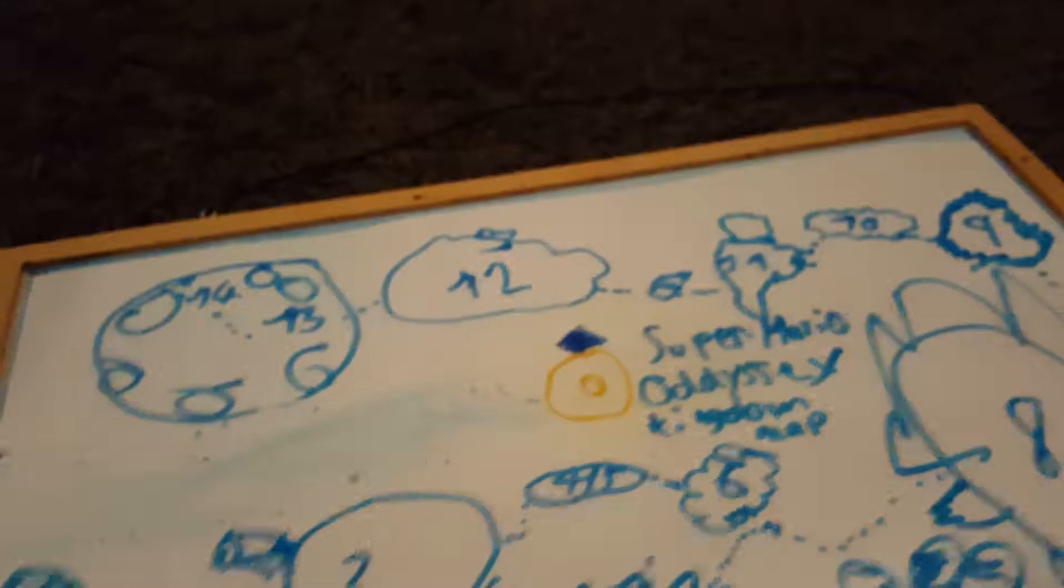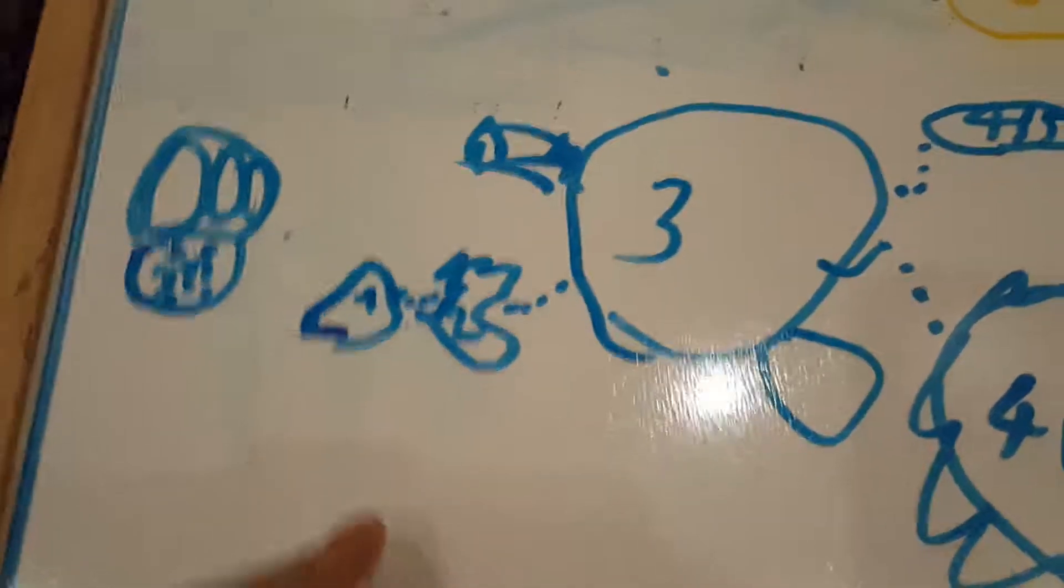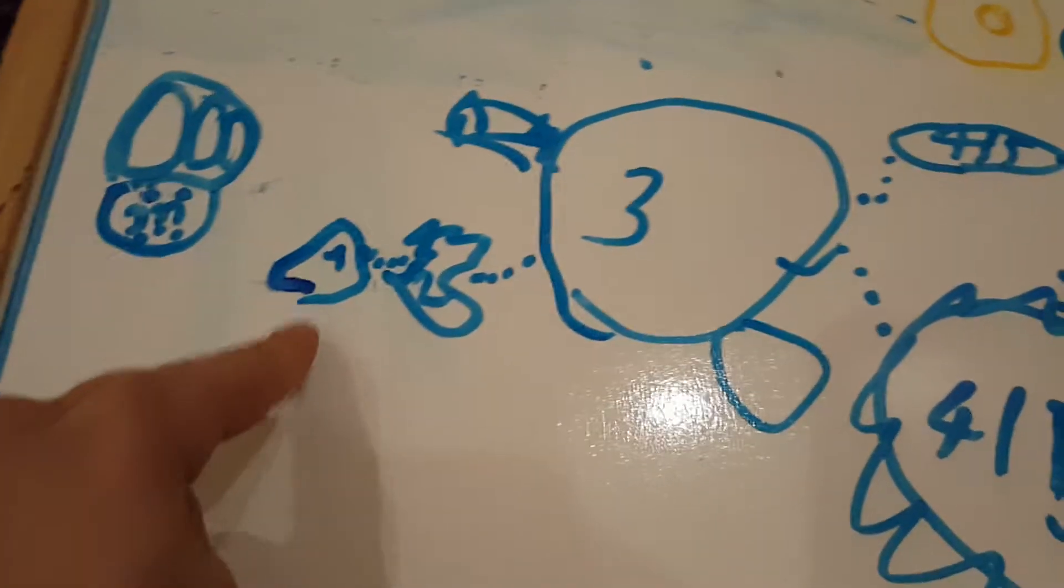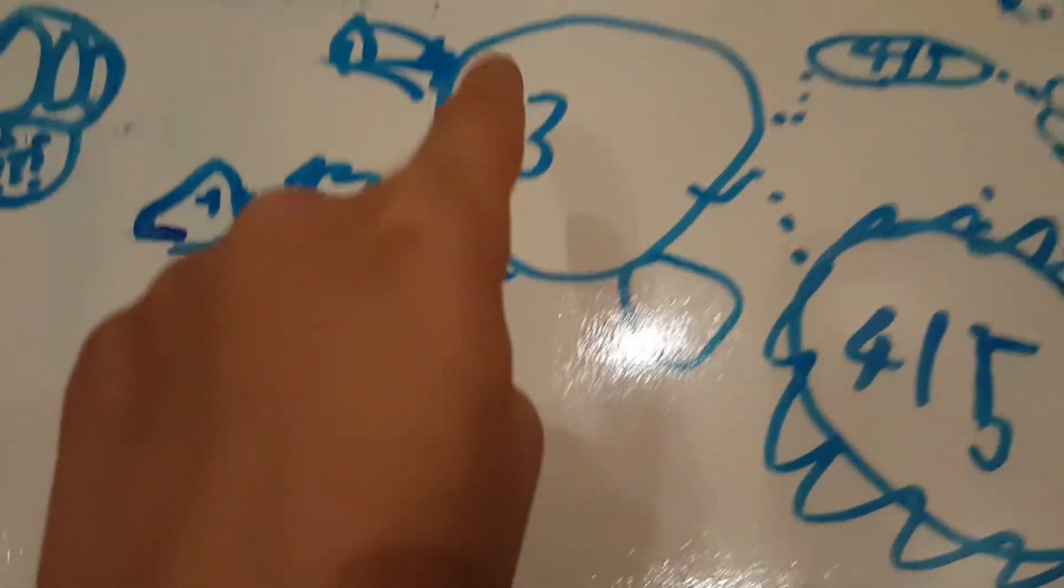But I don't know the shapes of all the kingdoms. So they might look a bit weird. But that's okay. This is the Cap Kingdom. And this is the Cascade Kingdom. And this is the Sand Kingdom.